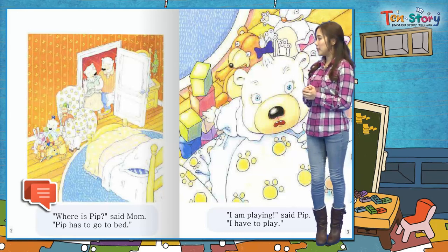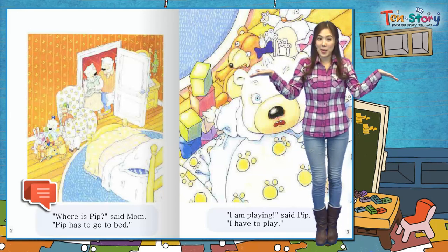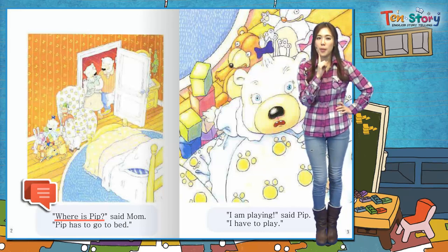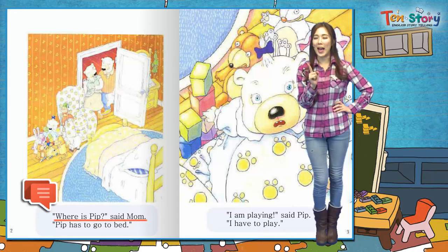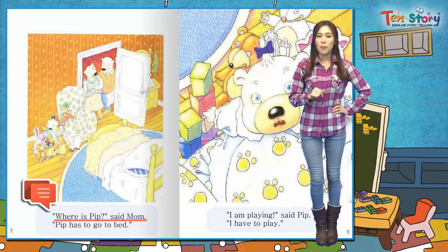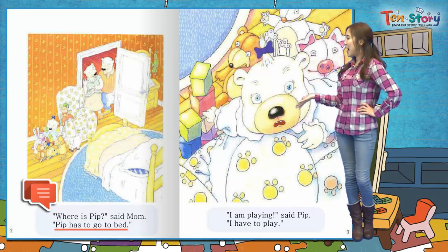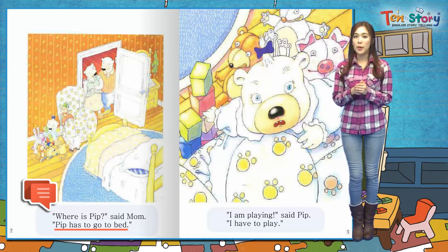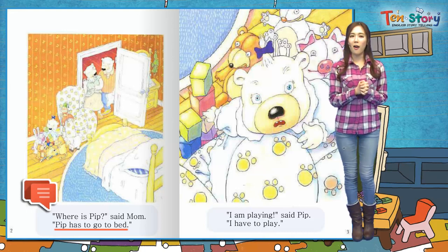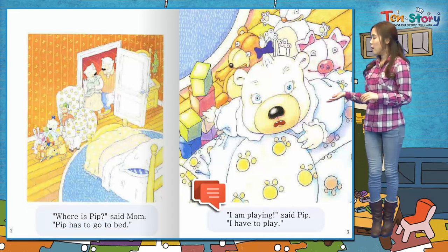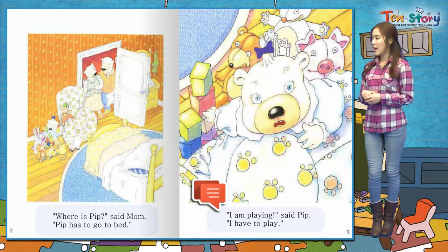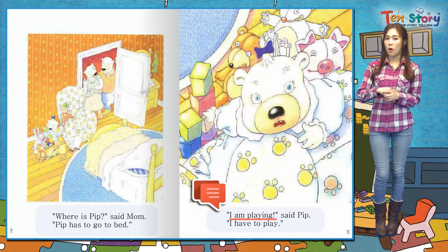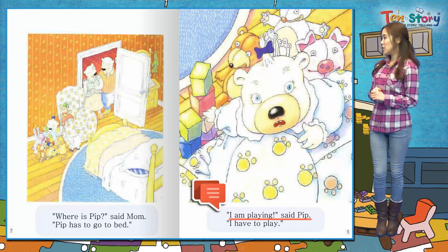Where is PIP? said mom. PIP 어디 있니? PIP은 어디에 있니? 엄마가 말씀하셨어요. PIP has to go to bed. PIP은 잠을 자야 돼. 잠자리 들어야 돼. 이런 뜻이에요. 그런데 PIP이 얘기했어요: I am playing, said PIP. 나는 놀고 있어요, 하고 PIP이 말했어요. 신나게 놀고 있나 봐요.